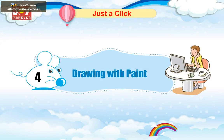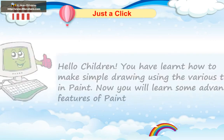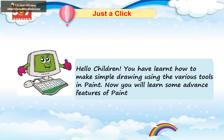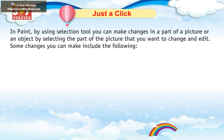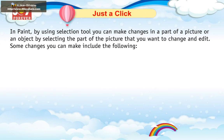Chapter 4: Drawing with Paint. Hello children, you have learned how to make simple drawings using the various tools in Paint. Now you will learn some advanced features of Paint. By using the selection tool, you can make changes in a part of a picture or an object by selecting the part of the picture that you want to change and edit. Some changes you can make include the following.